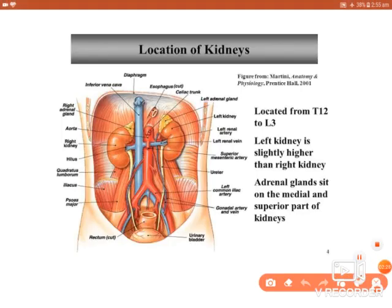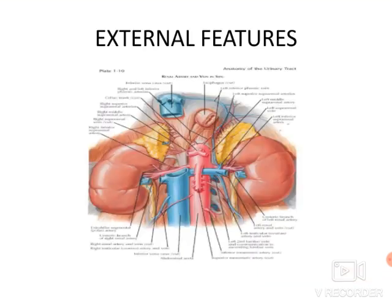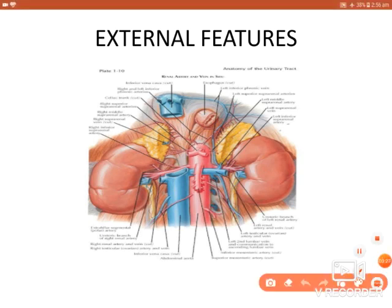Looking at the posterior abdominal wall, we can see the diaphragm superiorly, the inferior vena cava and abdominal aorta medially. The right and left kidneys lie on either side of the vertebral bodies. Posteriorly, the kidney lies over the fascia of three muscles: psoas major (most medial), quadratus lumborum, and transversus abdominis. The right kidney is slightly lower than the left due to the liver on the right side.